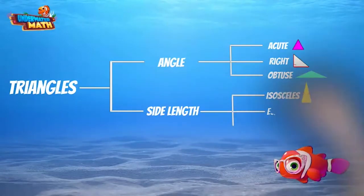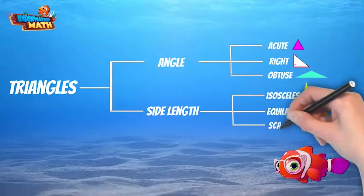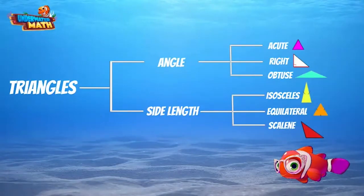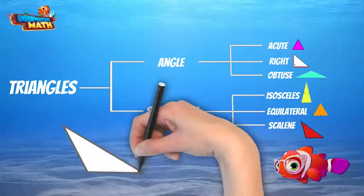Equilateral triangles have three sides that are the same length, and scalene triangles don't have any sides that are the same length. Let's use our organizer to classify this triangle.